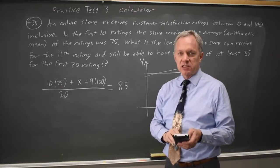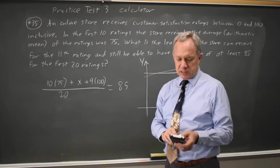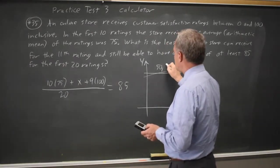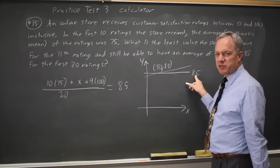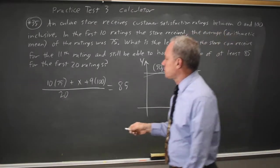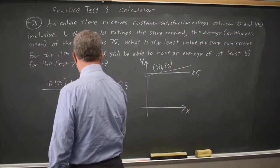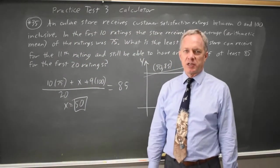Now if I use second trace, which is calculate, choice 5 is intersect. Find the intersection. If I hit enter 3 times, it says the intersection is at X equals 50, Y equals 85. We knew the Y value would be 85 because we specified that. So X equals 50 is the lowest possible score you can get and still receive an average rating of 85.